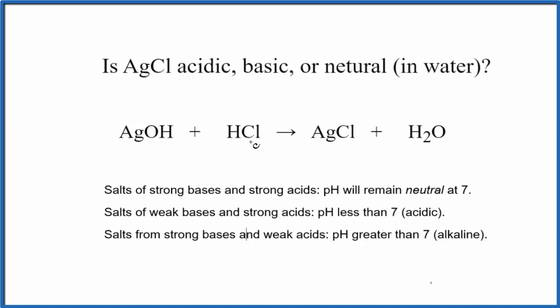The first thing we need to do is figure out the neutralization reaction that made the AgCl. If we have silver hydroxide, AgOH, metal and hydroxide, that's a base, and hydrochloric acid, if these neutralize each other, they'll produce AgCl and water. It's a neutralization reaction. So we know the substances involved.